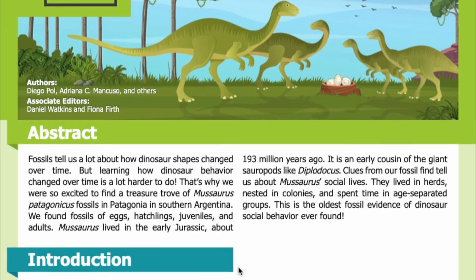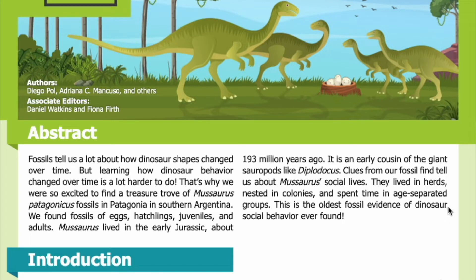Abstract: Fossils tell us a lot about how dinosaur shapes changed over time, but learning how dinosaur behavior changed over time is a lot harder. That's why we were so excited to find a treasure trove of Mussaurus patagonicus fossils in Patagonia, in southern Argentina. We found fossils of eggs, hatchlings, juveniles, and adults. Mussaurus lived in the early Jurassic, about 193 million years ago. It is an early cousin of the giant sauropods like Diplodocus. Clues from our fossil find tell us they lived in herds, nested in colonies, and spent time in age-separated groups — the oldest fossil evidence of dinosaur social behavior ever found.